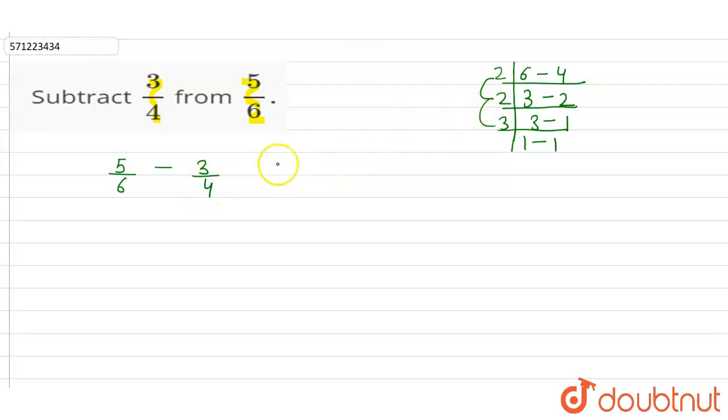6 and 4 will be equal to 2 into 2 into 3, that is 2 into 2 is 4, 4 into 3 is 12. So we have to make the denominator equal to 12. So for 5 by